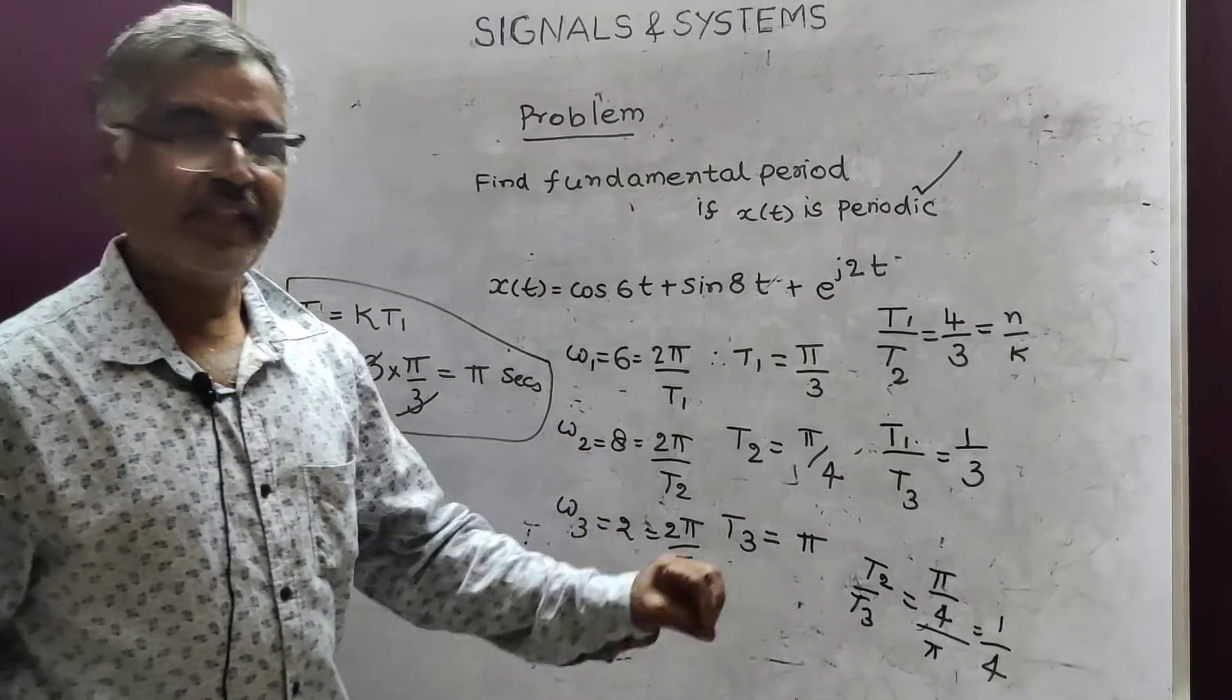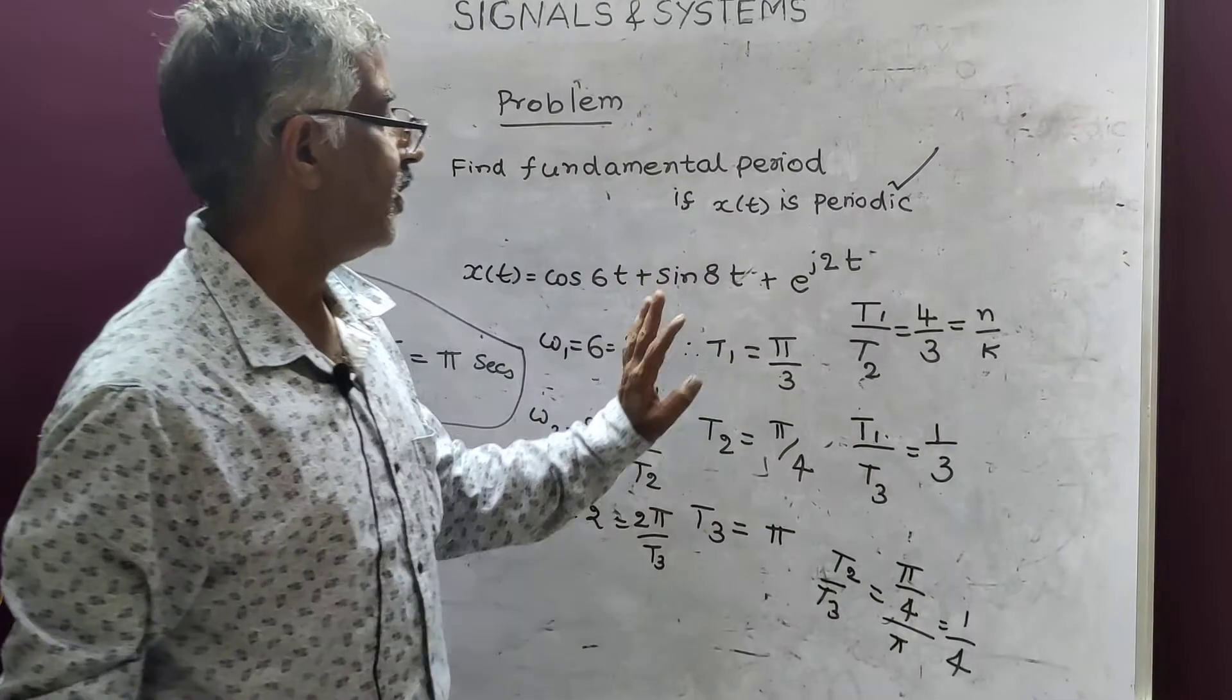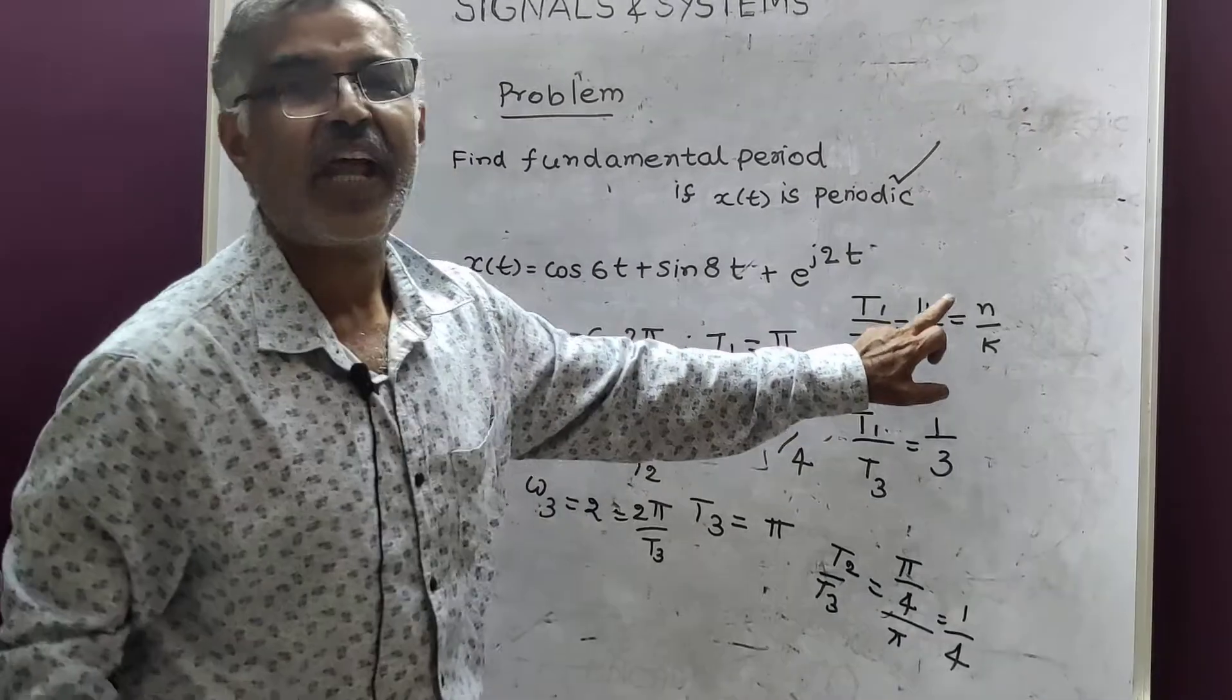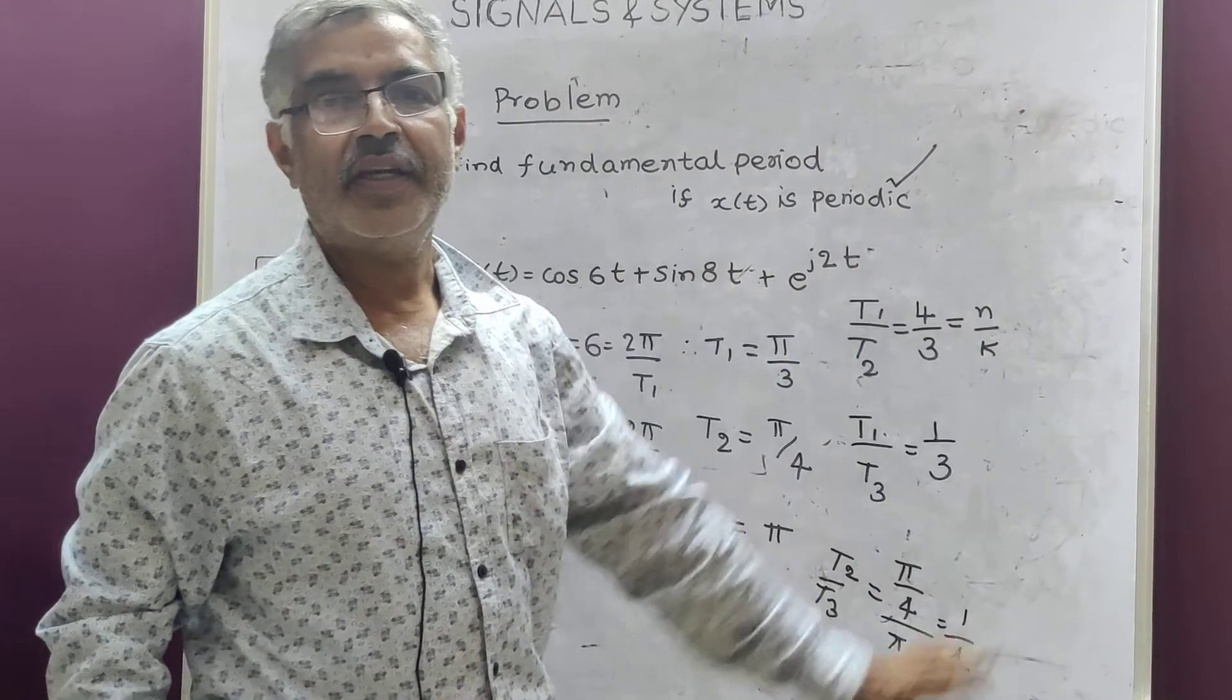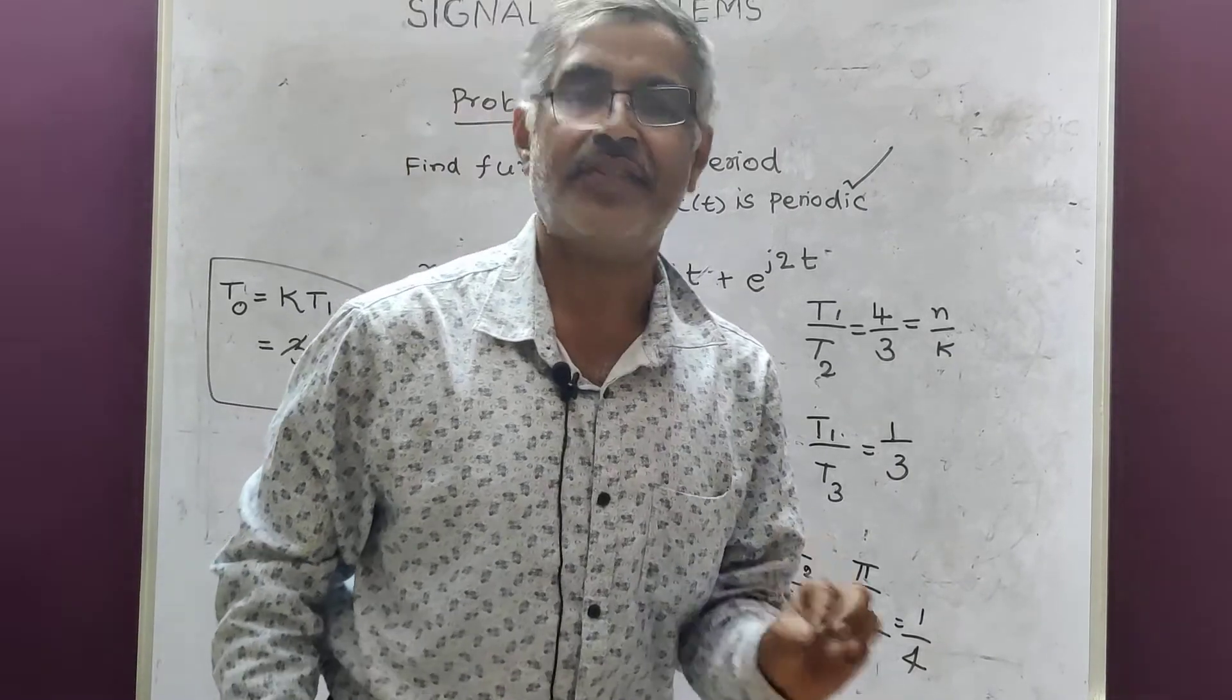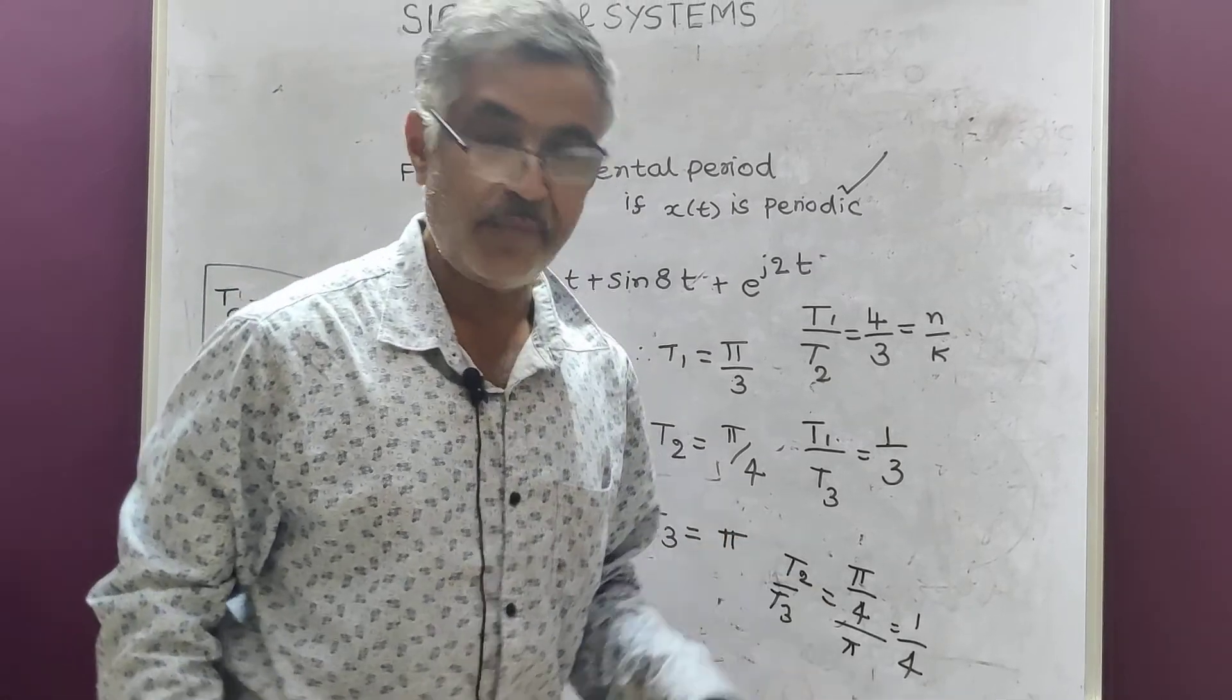With this, whether it is 2 terms or 3 terms, procedure remains same. You remember that the condition for periodicity is the ratio of time periods must be a rational number. Otherwise it is aperiodic. In the next class I will work out some interesting problems on discrete signals. Thank you.